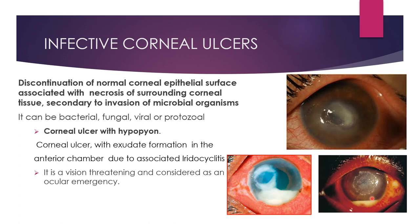Due to increased permeability, there is outpouring of polymorphonuclear leukocytes, which leads to exudate formation in the anterior chamber. The hypopion is not due to true invasion by bacteria unless the Descemet's membrane breaks and there is direct access of organisms into the anterior chamber. Whenever a corneal ulcer is associated with hypopion, we label the diagnosis as corneal ulcer with hypopion. Once the ulcerative process is controlled, the hypopion is absorbed.